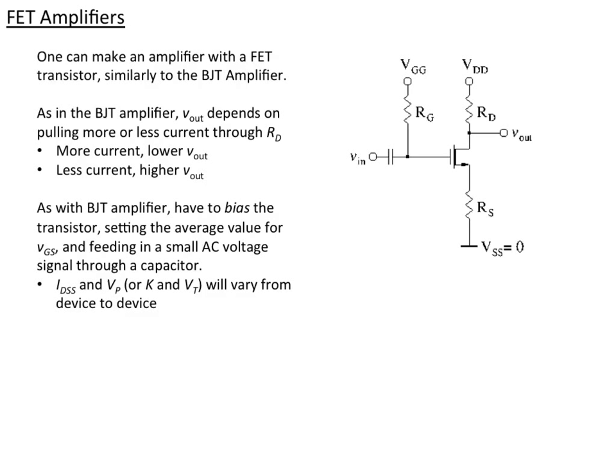As in that case, the amplification comes from pulling different amounts of current through the drain resistor. That would have been the collector resistor in the BJT case. So if we pull more current through, then Vout will go down as more voltage drops from VDD across RD. And if we pull less current through, then Vout will go up as the voltage drop becomes less.